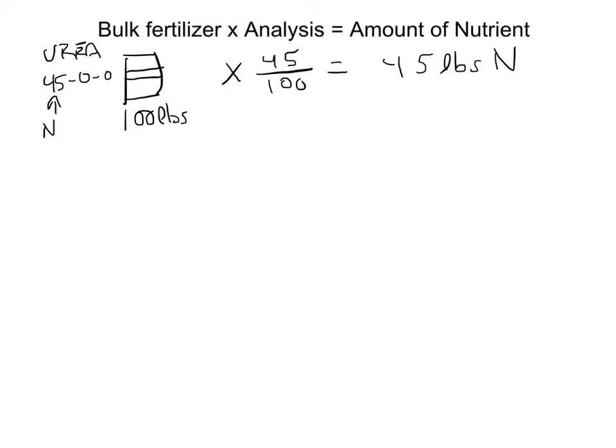Bulk fertilizer, so however much fertilizer we have, times what the analysis of that particular fertilizer is, will equal how much nutrient we have in that fertilizer. So if we had a bag, and that bag was urea fertilizer at 45-0-0, this is our nitrogen amount. So this is our bulk, let's say 100 pounds of fertilizer times its analysis for a particular nutrient, let's say nitrogen. So that's 45 divided by 100 equals the amount of nutrients. So 100 pounds times 45 divided by 100 equals 45 pounds of nitrogen.